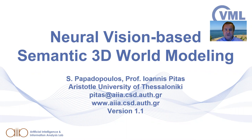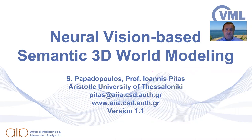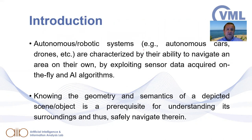Ladies and gentlemen, the topic of this talk is on how to use neural techniques for vision-based semantic 3D world modeling. This means that we're going to do 3D scene geometry estimation using neural networks. We can do the same for semantic image segmentation, and then we're going to find ways to jointly estimate 3D scene geometry and semantics and map them in semantic 3D world maps.